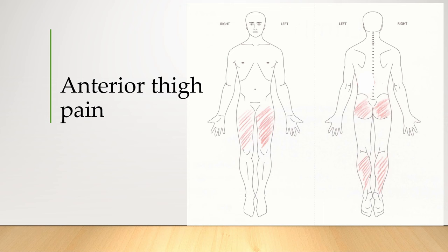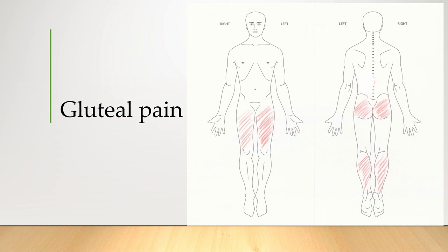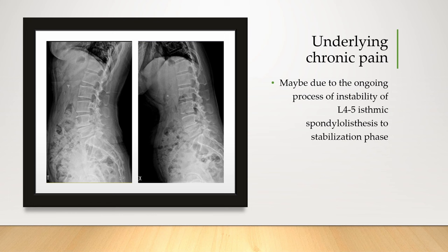Typically, patients with isthmic spondylolisthesis rarely complain of radicular pain unless associated with acute disc herniation or severe anterior spondylolisthesis affecting nerve roots. Regarding gluteal pain, I aim to isolate its cause from the lumbar spinal origin. The underlying low-grade chronic back pain may be attributed to the ongoing transition from instability to the stabilization phase in her L4-5 isthmic spondylolisthesis.